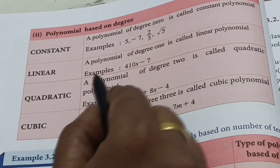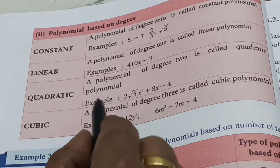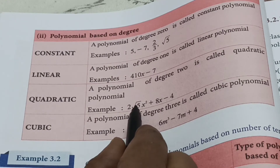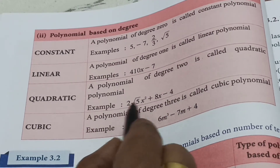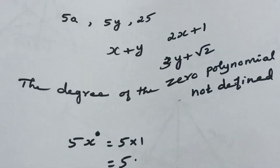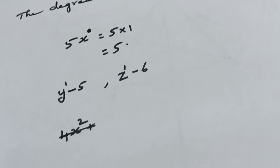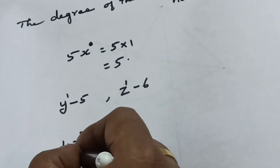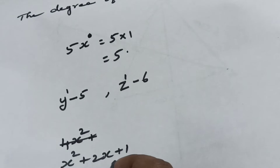A polynomial of degree 2 is called a quadratic polynomial. For example: 2 root 5 times H squared plus 8N minus 4 — the highest power is 2, so it is a quadratic polynomial. Another example is X squared plus 2X plus 1 — the highest power of X is 2, so it is a quadratic polynomial.